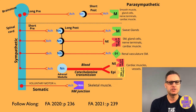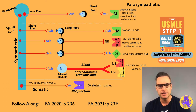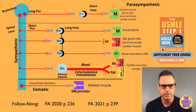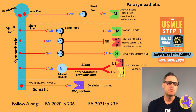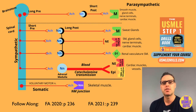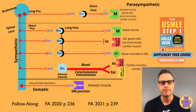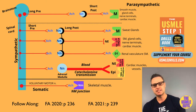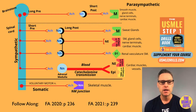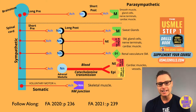You can't forget this image — you've probably seen it many times. Remember that the pelvic splanchnic nerves and cranial nerves 3, 7, 9, and 10 are part of the parasympathetic nervous system. The parasympathetic system has long presynaptic and short postsynaptic fibers, while the sympathetic system has short presynaptic and long postsynaptic fibers. The adrenal medulla is innervated by preganglionic sympathetic fibers, and the sweat glands, while part of the sympathetic system, are innervated by cholinergic fibers.